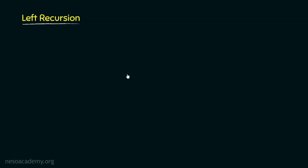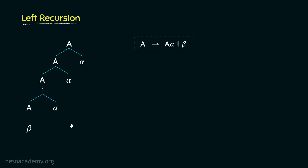During the previous session, we observed that a generic left recursive grammar is of the form: A can be rewritten as A-alpha or beta. Since the non-terminal A is reoccurring as the leftmost non-terminal symbol on the right-hand side, this is a left recursive grammar. Using this grammar, we can have derivation trees, and from A we can derive beta followed by alpha-star. This is the language generated by the left recursive grammar.